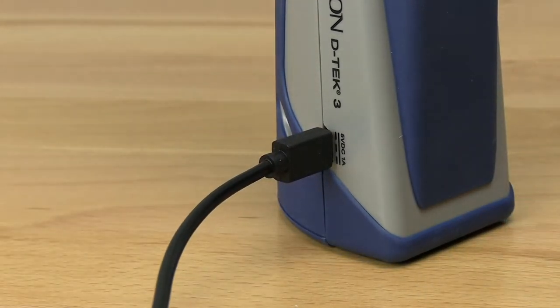The power indicator slowly flashes to tell you DTEK3 is charging and changes color to indicate the current charge percentage both while charging and during normal operation. A full charge takes less than three hours.